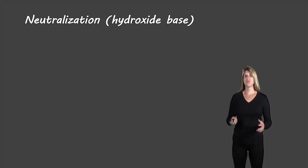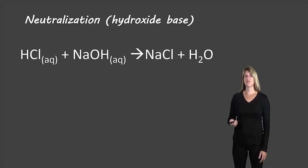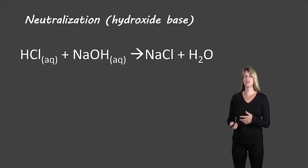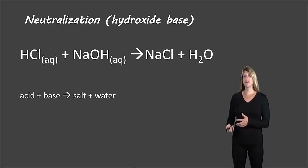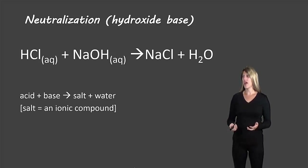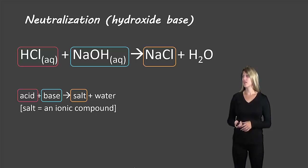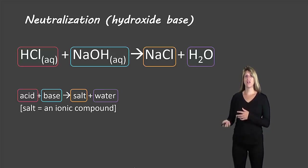Let's start off with the two different types. The first is a neutralization reaction with a hydroxide base. Here you would have something like hydrochloric acid and sodium hydroxide. We know we're dealing with an acid-base neutralization with a hydroxide base because it's sodium hydroxide. An acid plus a base gives you water and a salt — salt being just an ionic compound. Our acid is hydrochloric acid, our base is sodium hydroxide, our salt is sodium chloride, and the water is H₂O.